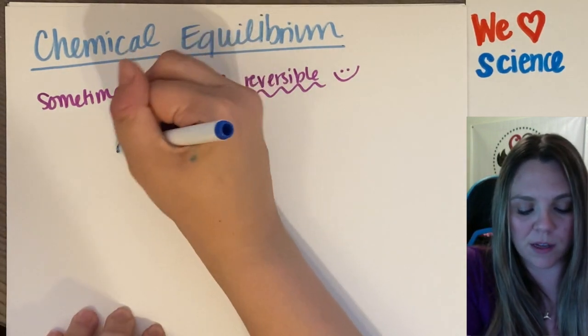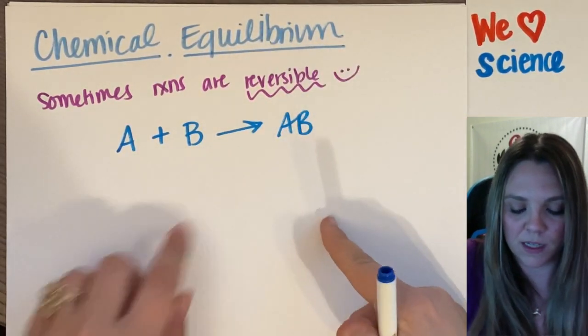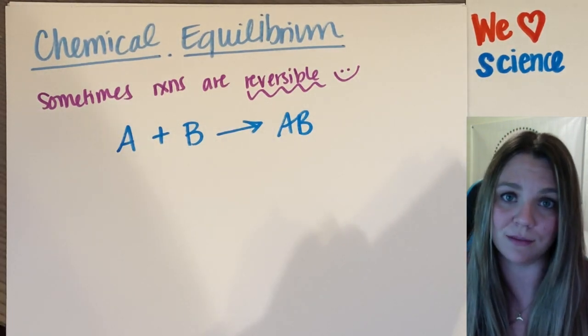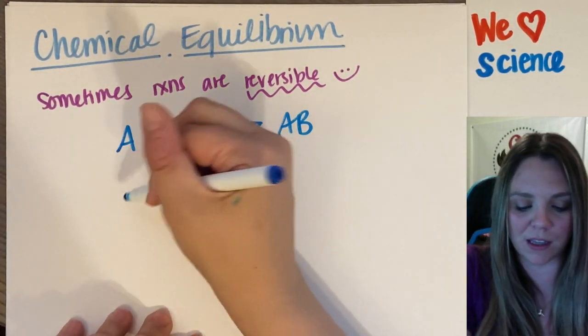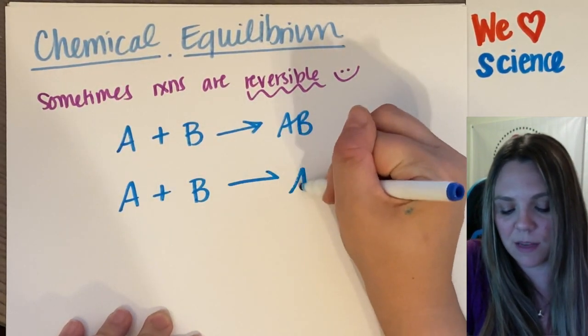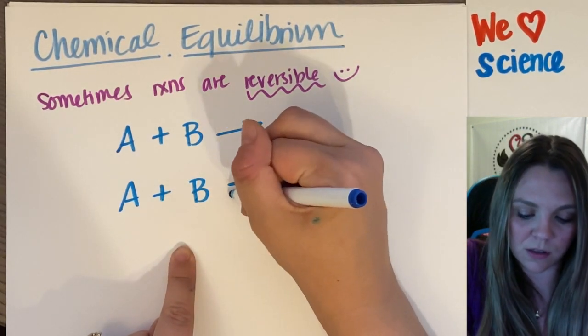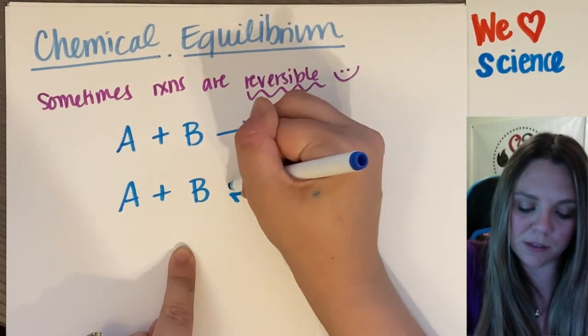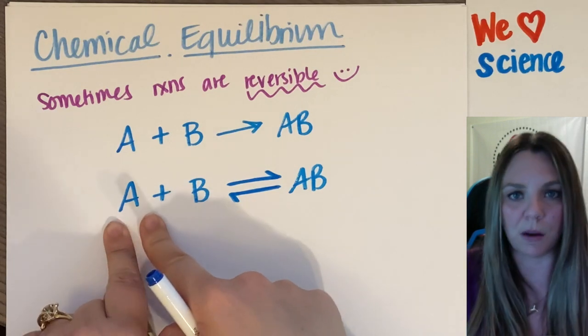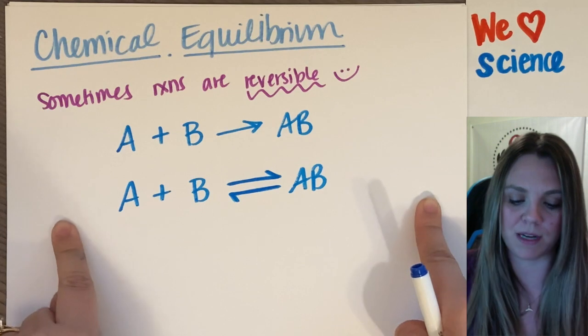So the way we used to think about a reaction is like this: A nice synthesis reaction. A plus B, they react, they make AB, and we're done. Now we're going to think about it like this. A plus B reacts to make AB, but AB will also split up, decompose, break apart, and make back my reactants. It's a two-way street now. Both are happening.